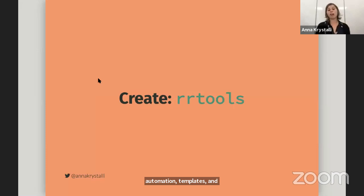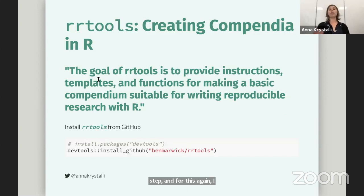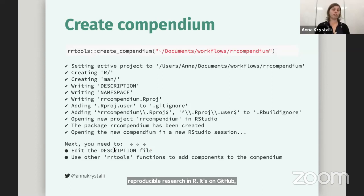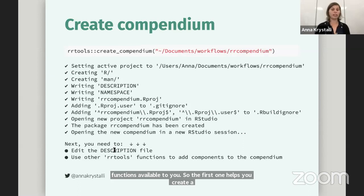This brings us to creating the next step. For this, I feel we're really lucky in R because we've got this package called rrtools. The goal of rrtools is to provide instructions, templates, and functions for making a basic compendium suitable for writing reproducible research in R. It's still on GitHub, so you will have to install it from there. But once you do, you have these functions available to you. The first one helps you create a compendium. What I like about the functions in this package is that at every step, they're telling you exactly what they're doing. It's telling you it's building an R package skeleton with these four files and directories, making it an R project, which is nice for RStudio users, and then it launches it as well.